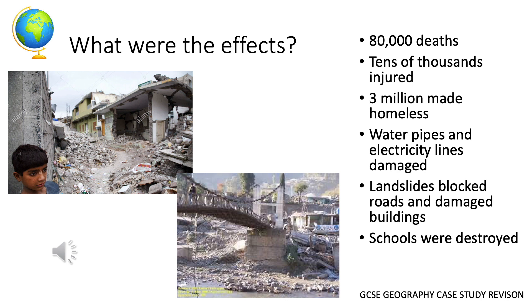Water pipes and electricity lines were also damaged. The fact that water pipes were damaged meant that people had a lack of access to fresh water, which also meant that disease spread in many regions across Pakistan.